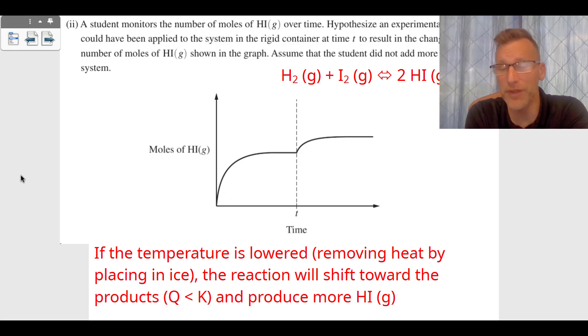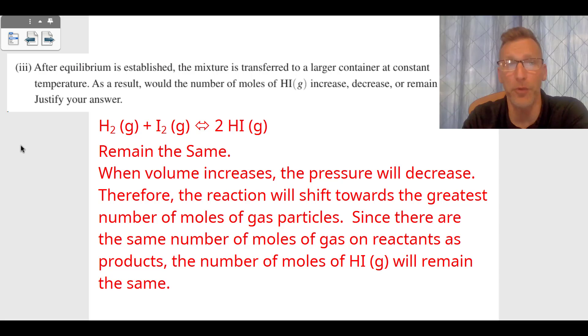So since it's exothermic, what they really want us to do is, if the temperature is lowered by removing heat by placing this reaction on ice, the reaction will shift towards the products, Q will be less than K, and it's going to start to produce more HI gas. So we got to lower that temperature, and that's going to be a third point.